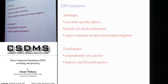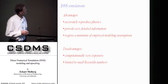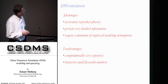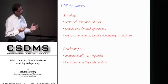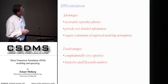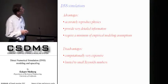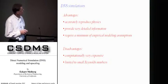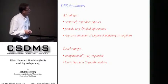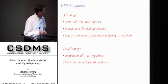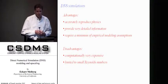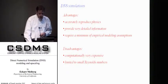To summarize for DNS simulations: they have clear advantages — they accurately reproduce the physics because we resolve all scales, they provide very detailed information on the flow field, shear stresses, and deposit profiles, and they require only a minimum of empirical modeling assumptions. The disadvantages are that they are computationally very expensive and limited to low Reynolds numbers. The question then is why can we not do a DNS simulation at Reynolds number 10 to the 9?